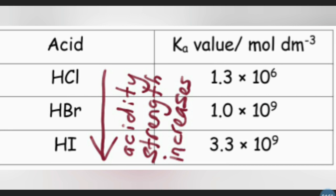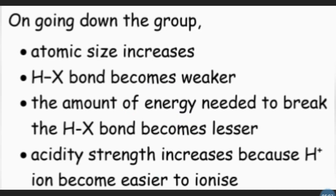Now let's compare the acidity of the strong acids. Based on the Ka values, acidity strength increases from hydrochloric acid to hydroiodic acid — the larger the Ka value, the stronger the acid. On going down the group, the atomic size increases, the hydrogen halide bond becomes weaker, and the amount of energy needed to break the bond becomes less. Acidity strength increases because the hydrogen ion becomes easier to ionize.